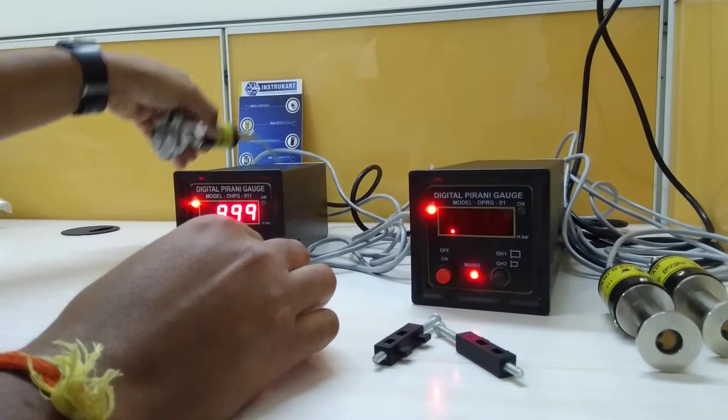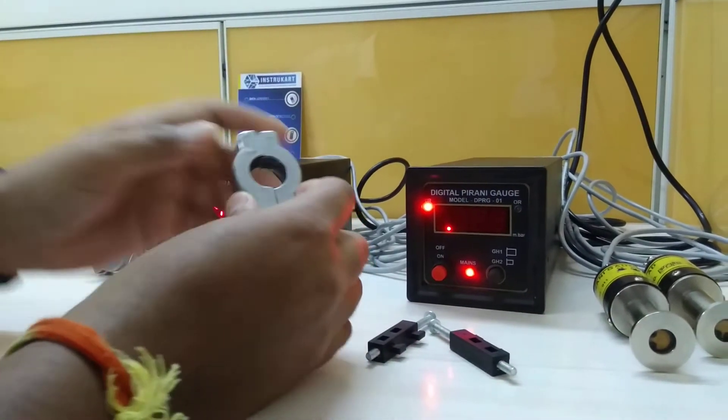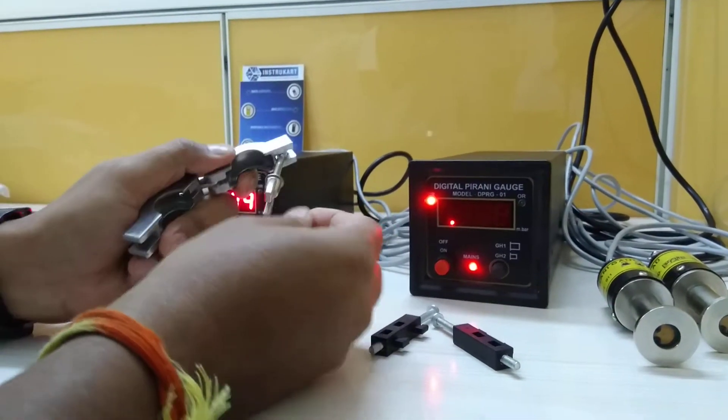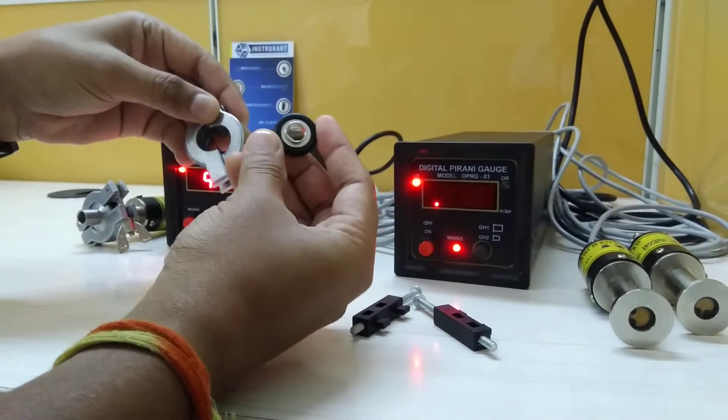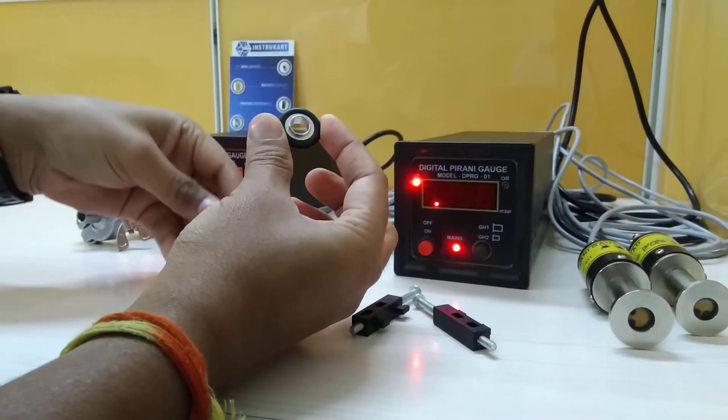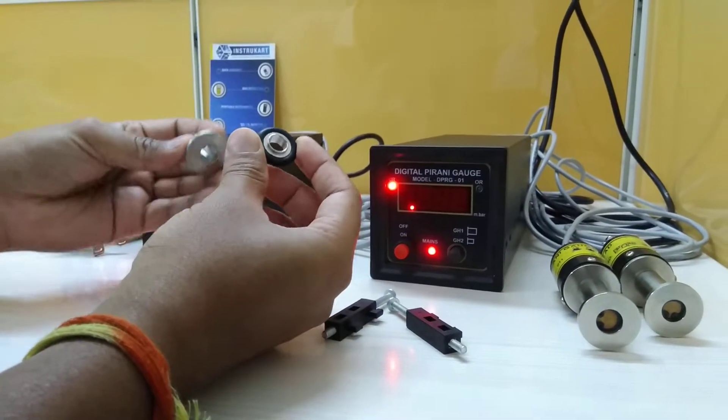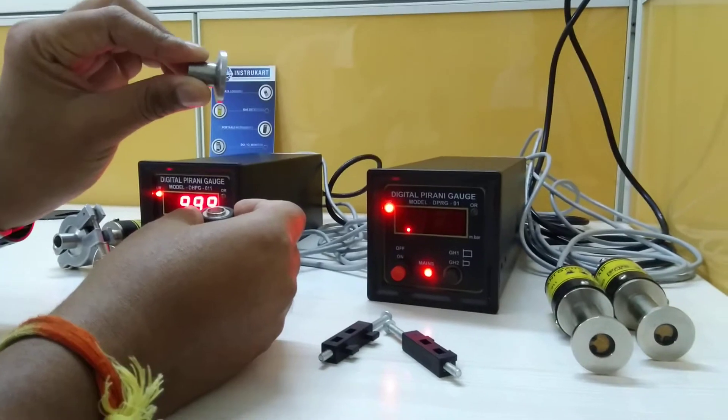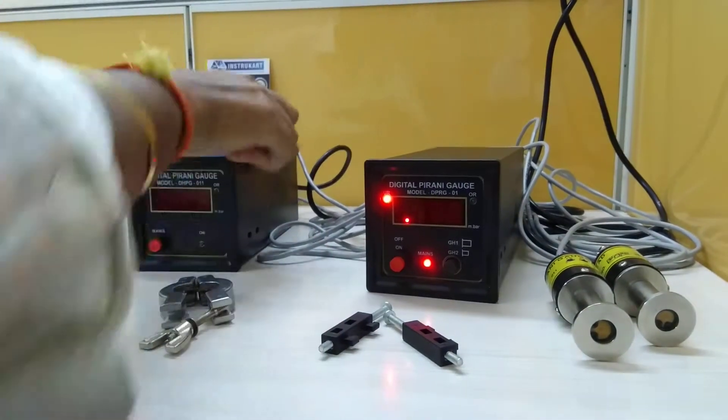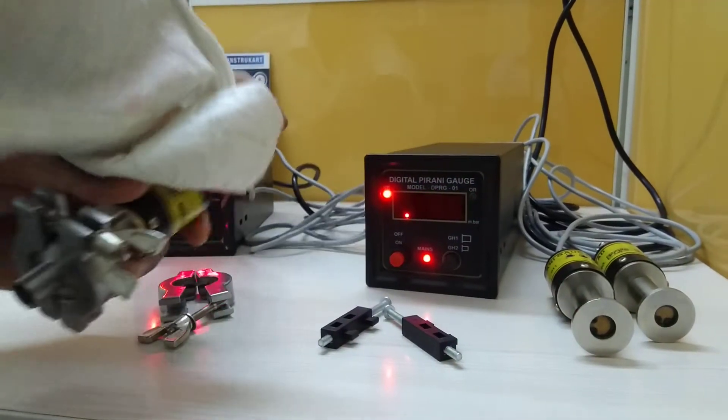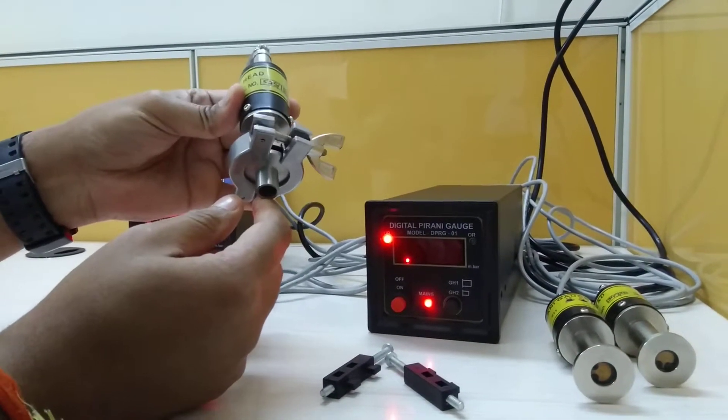As standard, we have the accessories including a KF clamp and O-ring. This O-ring is used to avoid any vacuum leakages, and a flange.